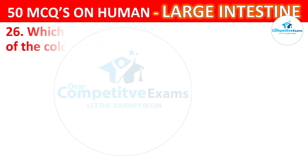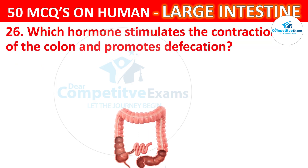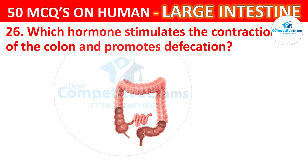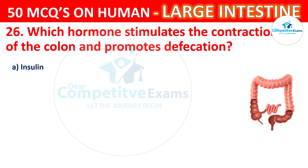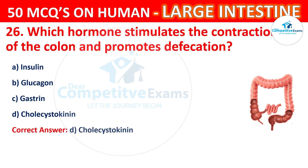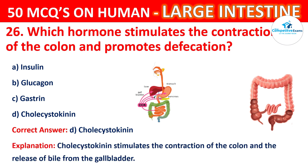Question 26. Which hormone stimulates the contraction of the colon and promotes defecation? Your options are Insulin, Glucagon, Gastrin, or Cholecystokinin. The correct answer is D, that is Cholecystokinin. Cholecystokinin stimulates the contraction of the colon and the release of bile from the gallbladder.